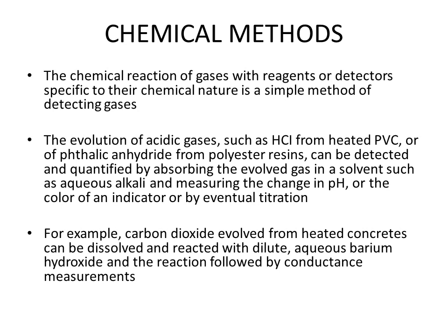In chemical methods, the chemical reaction of gases is performed with reagents or detectors specific to their chemical nature. The gases evolved during the process are made to react with specific reagents and are thereby detected. For example, the evolution of acidic gases like HCl from heated polyvinyl chloride, or phthalic anhydride from polyester resins, can be detected and quantified by absorbing the evolved HCl in aqueous alkali and measuring the change in pH, the change in color of an indicator, or by titrometric methods.